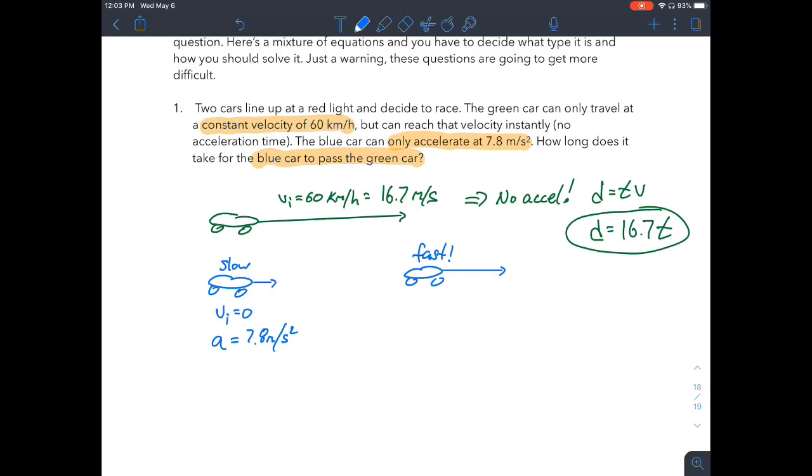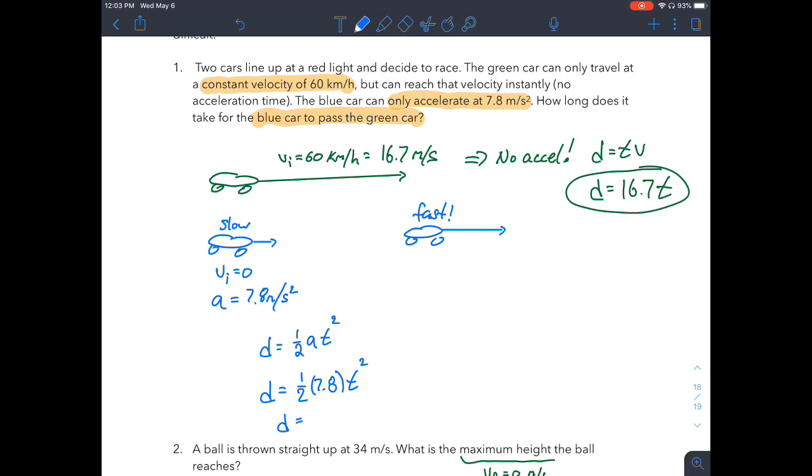The blue car, however, starts from rest but has an acceleration, which means we can say the distance it's traveled is one half at squared. So if we plug this in, one half times 7.8 times your time squared. Well, the distance that this car is going to go is 7.8 divided by 2, which is 3.9 times your time squared. So in one second, if we just do a quick math, we know in one second, the green car has traveled 16.7 meters. But in one second, the blue car has only traveled 3.9 meters. So this car is way out in front.